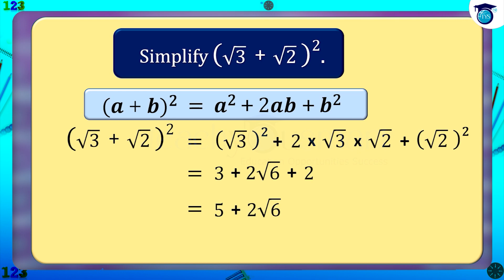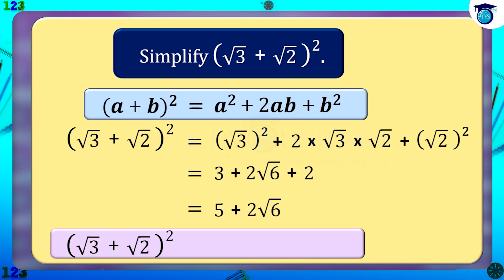That is, (√3 + √2) the whole square equals 5 plus 2√6.